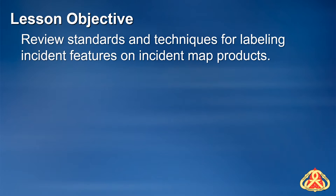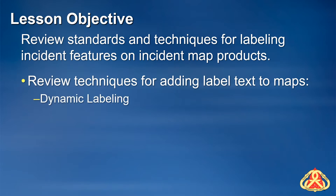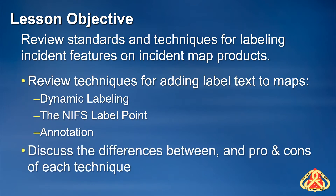The objective of this lesson is to review standards and techniques for labeling incident features on incident map products. Students who complete part two of this lesson will be able to identify the primary techniques for adding text labels to incident maps — dynamic labeling, the National Incident Feature Service label point layer, and annotation — and discuss the pros and cons of each method.